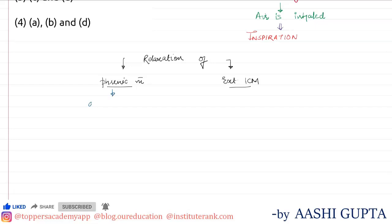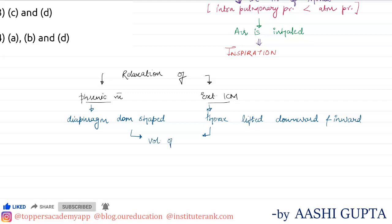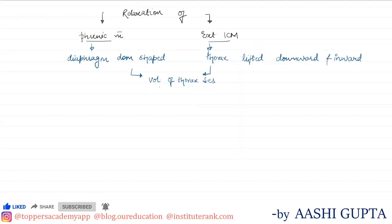When phrenic muscles relax, the diaphragm returns to its dome shape. Therefore the volume decreases. The external intercostal muscles relax, so the thorax moves downward and inward back to its position. Due to these two reasons, the overall volume of the thorax decreases.